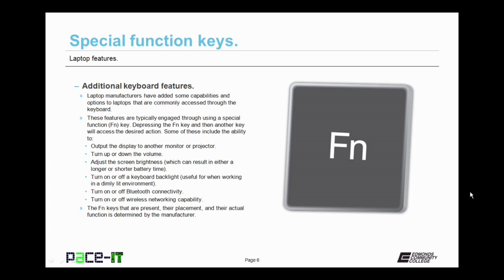Some of these include the ability to output your display to another monitor or a projector, to turn up or down the volume on the system, to adjust your screen brightness — which can either prolong your battery life or shorten it — and to turn on or off the keyboard backlight. Those are very useful when working in a dimly lit environment. There also tends to be a function key or two that allows you to turn on or off your wireless capability, either Bluetooth or 802.11.